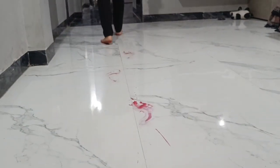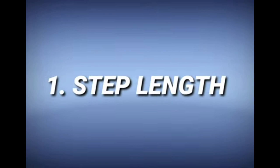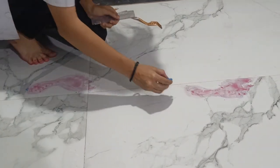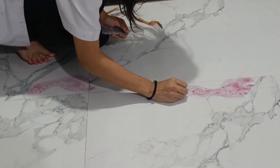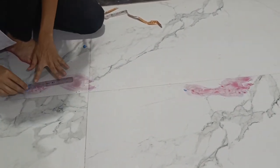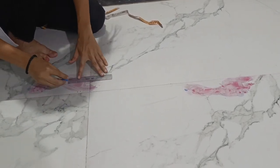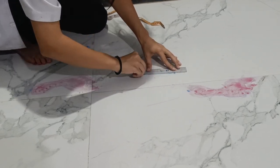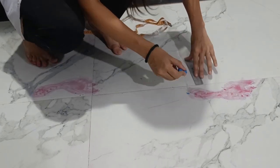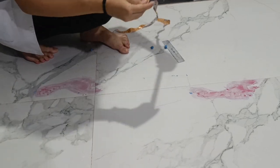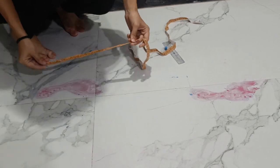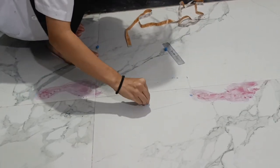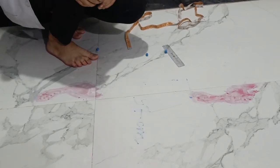Now we will see how to measure the variables. Step length is the distance between the heel strike of one extremity to the heel strike of another extremity. I firstly marked the midpoint of the heels of both feet, then marked a straight line from the heel of the left foot, and then marked a perpendicular line from the heel of the right extremity joining the straight line. By using a measuring tape, I measured the distance. The normal range is 44 to 70 cm, and our finding is 57 cm.